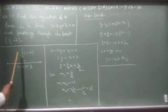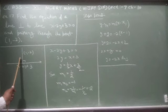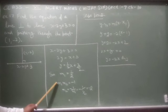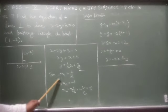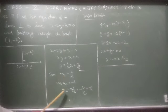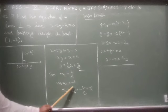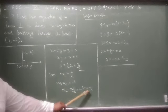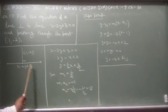हमें वो line find करनी है जो perpendicular है। Two perpendicular lines के लिए formula है: m1 × m2 = -1। m1 = 1/2 दिया हुआ है। m2 = -1/m1 = -2। तो perpendicular line का slope m2 = -2 है।